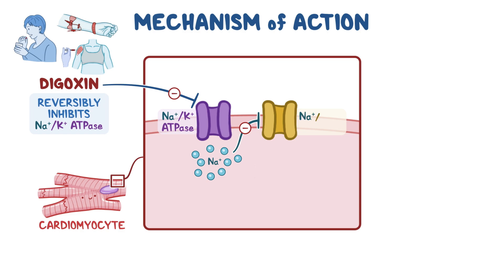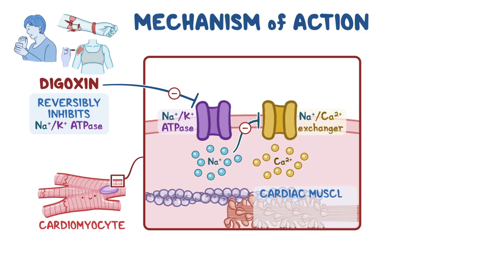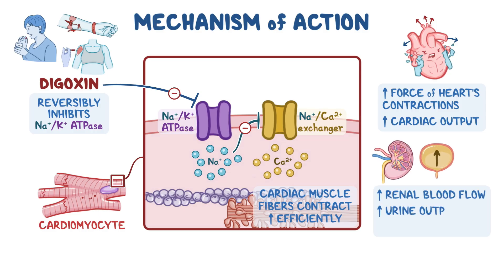This interrupts the sodium-calcium exchanger on the cell membrane, which normally pumps one calcium ion out in exchange for three sodium ions. As a result, digoxin causes calcium to build up within cardiomyocytes, allowing the cardiac muscle fibers to contract more efficiently, which leads to an increase in the force of the heart's contractions and cardiac output. In turn, the increase in cardiac output increases the renal blood flow and urine output, which also helps reduce peripheral edema.